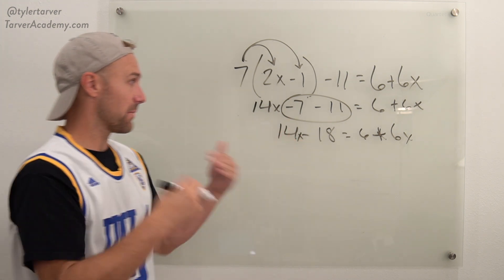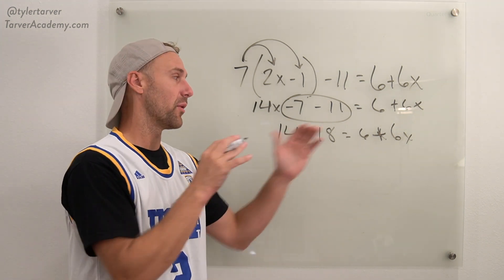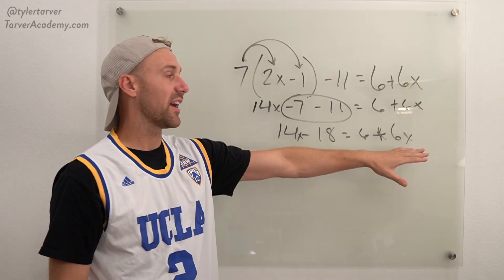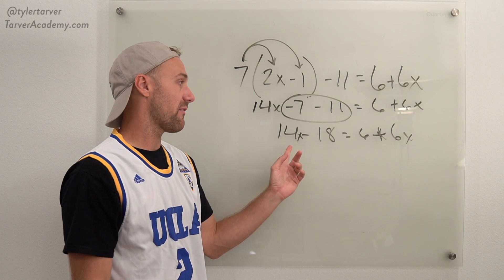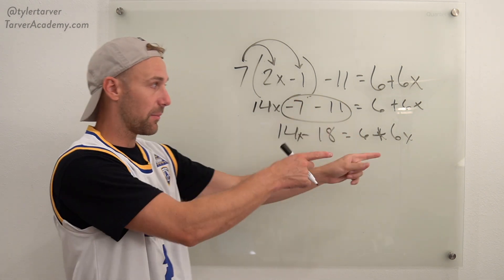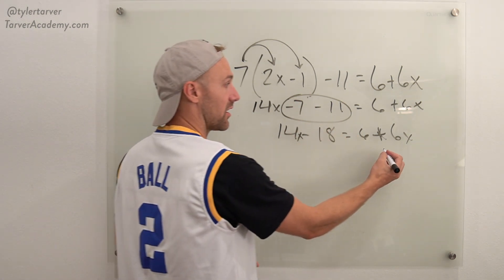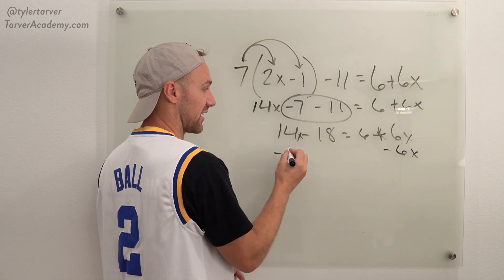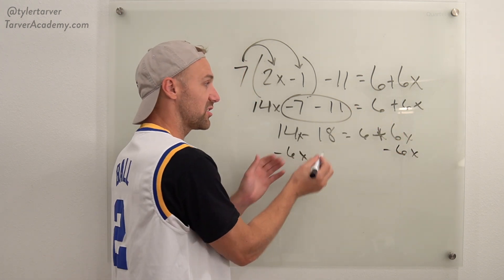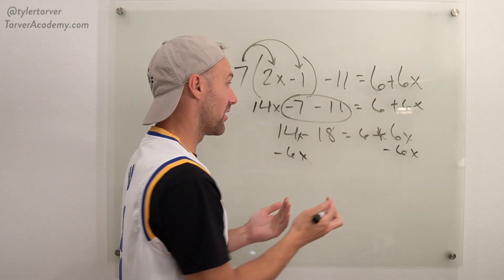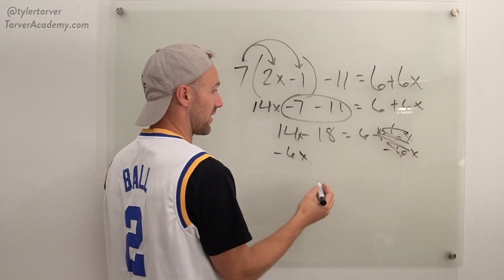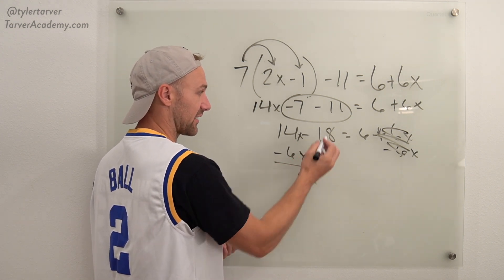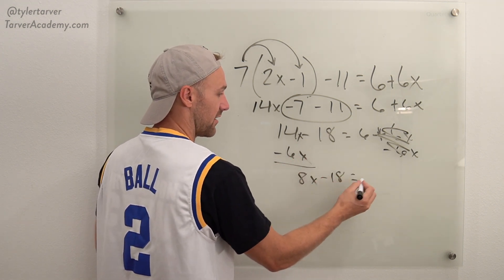Now I want to get my x's together on one side and my numbers on the other. So let's get our x's together first. We got 14x and 6x. I'm going to get rid of 6x on this side of the equal sign. I've got to subtract 6x. But you can't do something to one side without doing it to the other. That equals 0, that's cancelled out. 14x minus 6x is 8x. Bringing down negative 18, bringing down 6.